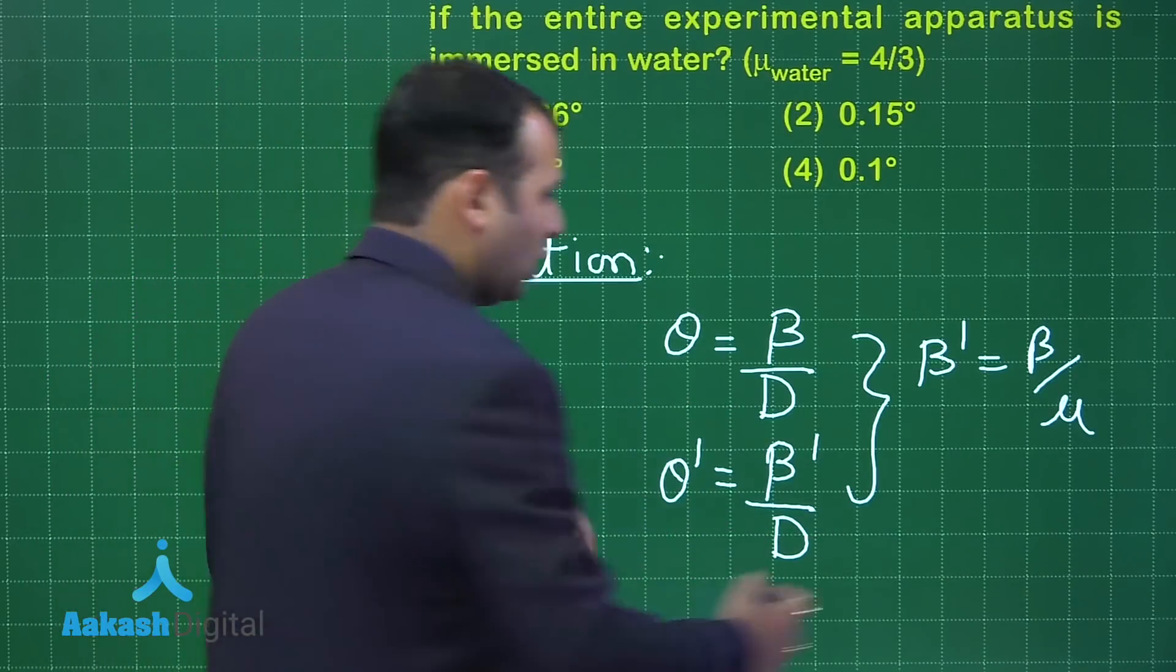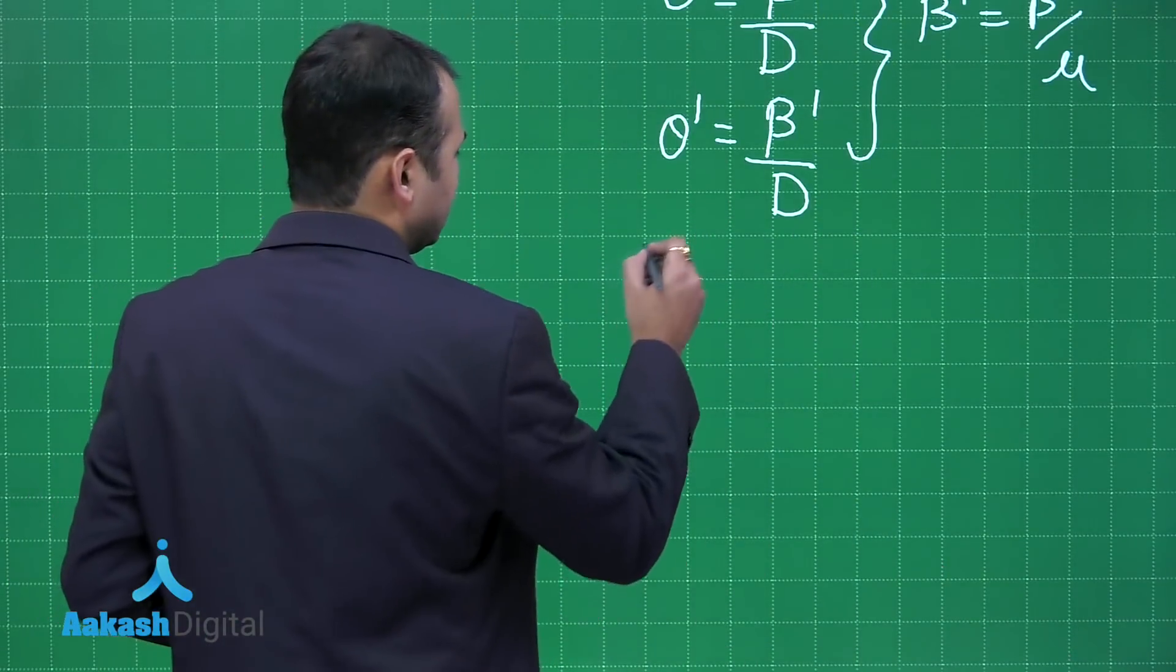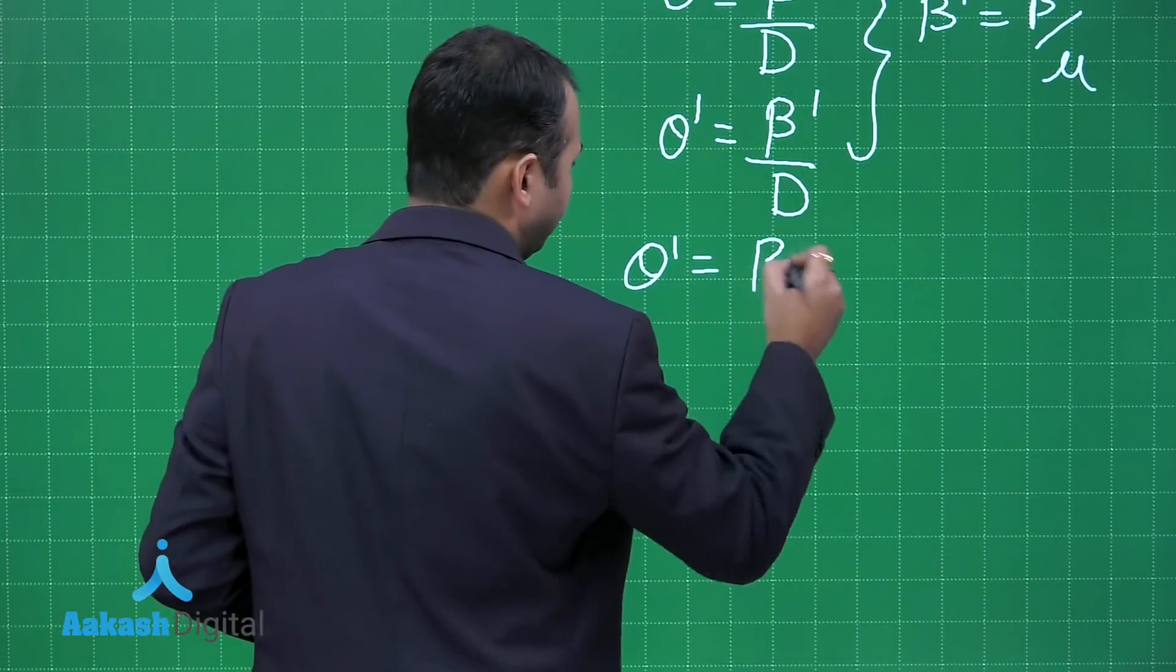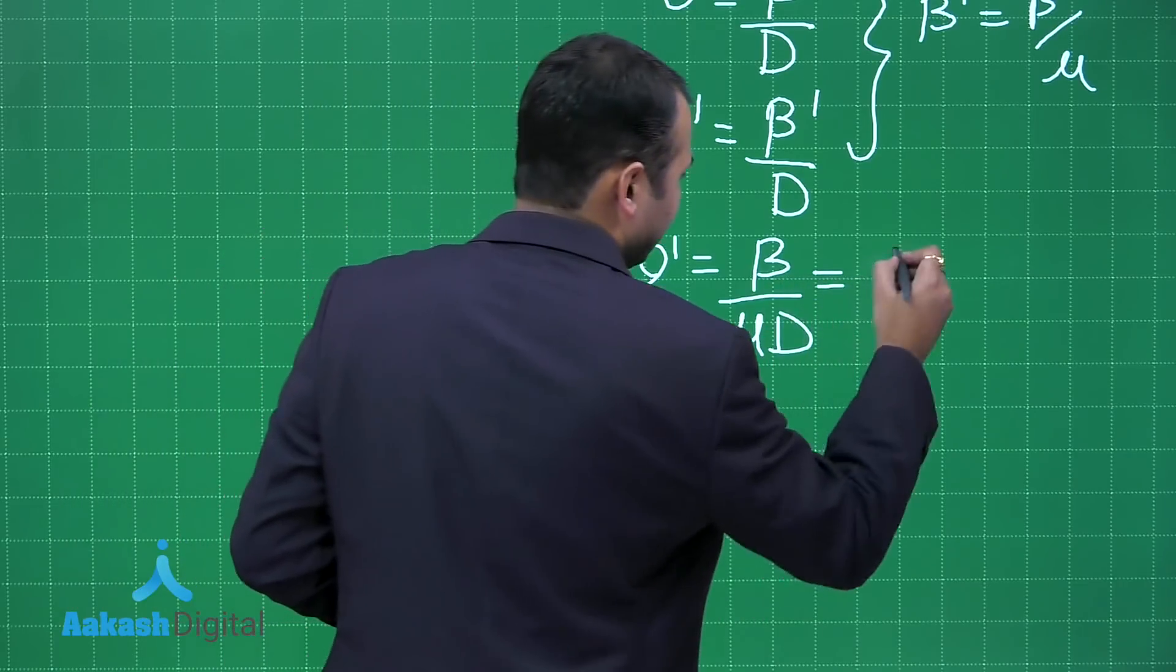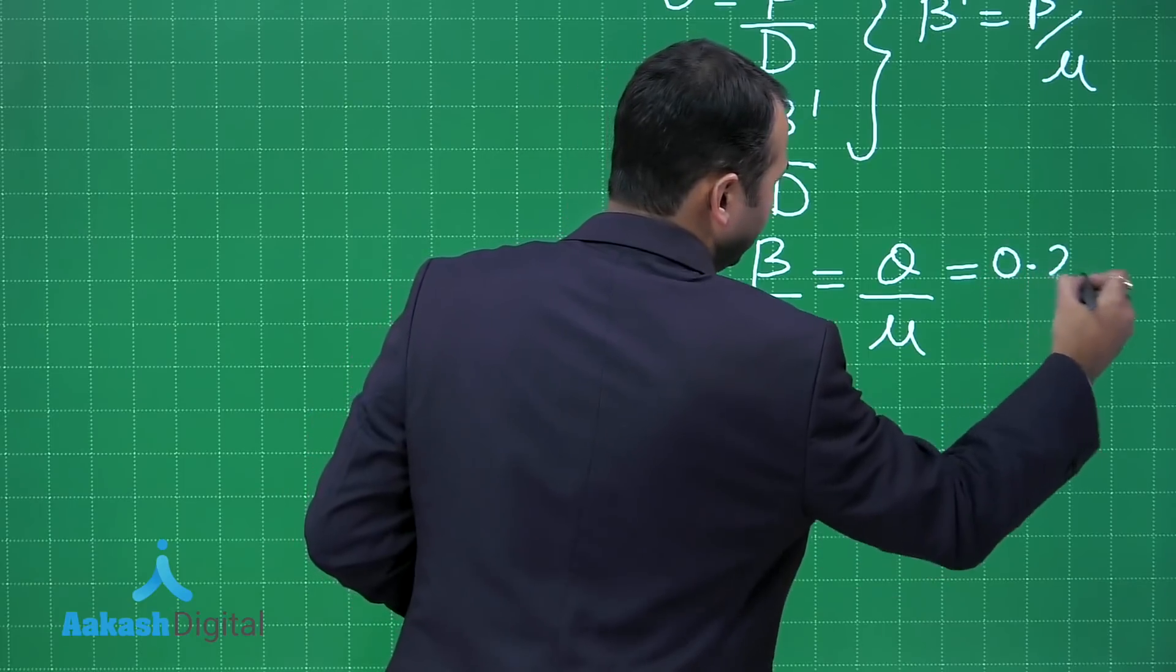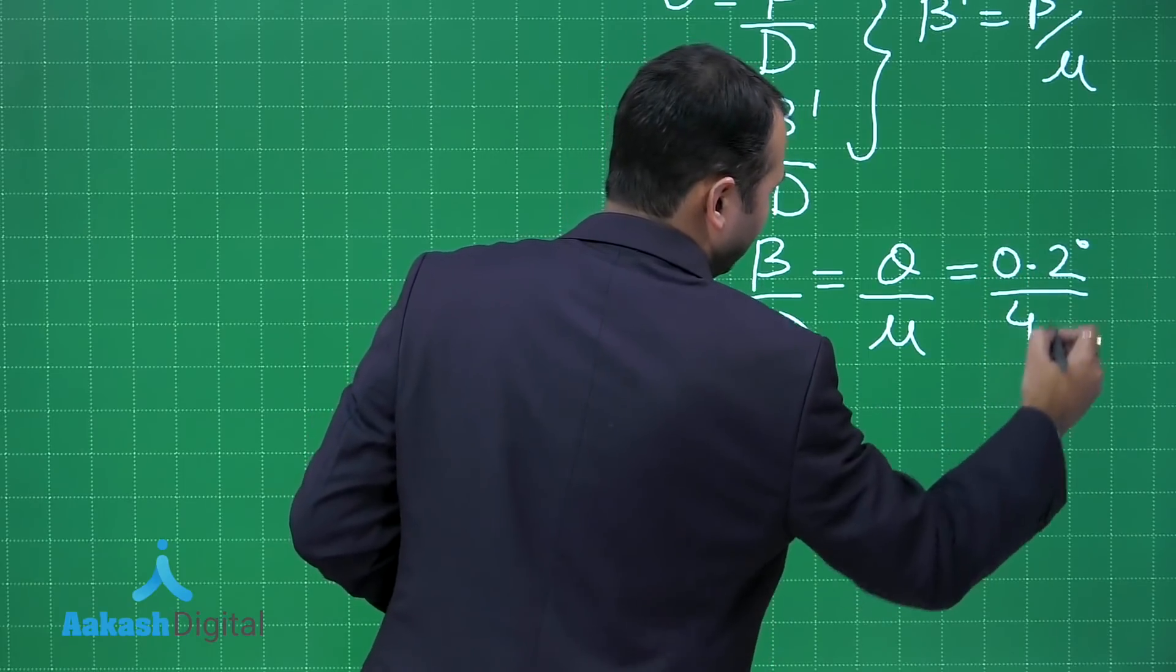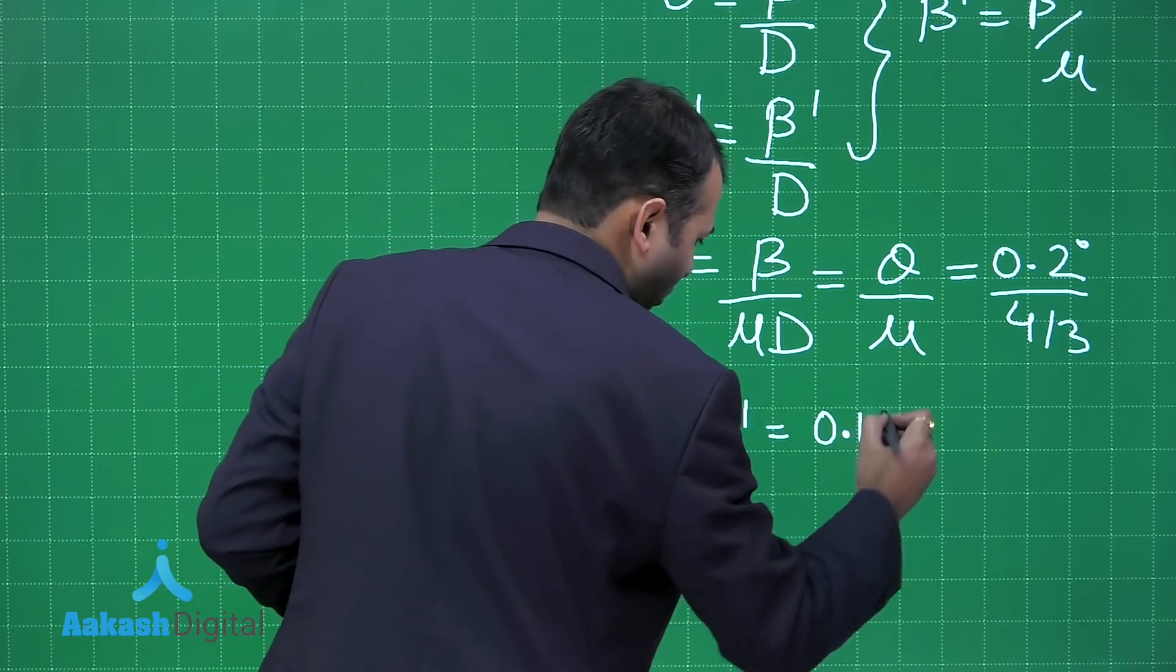So now you can easily write that theta dash will be equal to beta by mu d. Now this can be written as theta by mu, which is equals to 0.2 degree divided by 4 by 3. Solving this, you will get theta dash is equals to 0.15 degree.